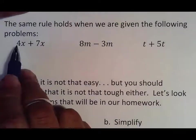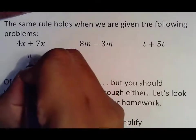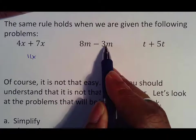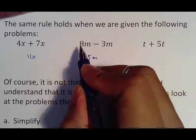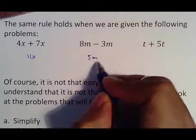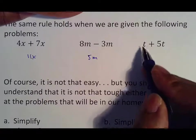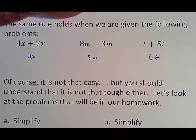So when you see 4x and 7x, there's 4x's and 7x's, which make 11x's. 8m minus 3m. You just simply say 8 minus 3 is 5m. So in other words, 8m's and I took away 3m's leaves me with 5m's. t and 5t. It's important for you to understand this represents 1t and 5t's, which is 6t's.